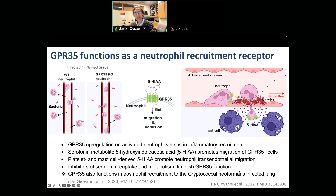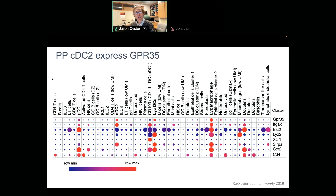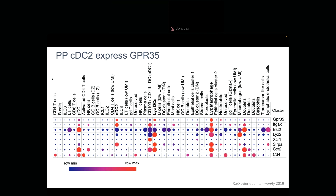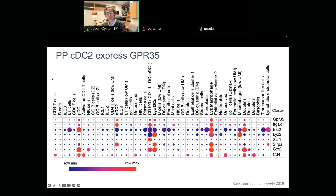With that background, we were still thinking about the roles of this receptor in dendritic cells specifically. A nice dataset from the Reminick/Xavier group showed that in Peyer's patches, just like in the spleen, GPR35 is well expressed in CDC2s. It's also in some other myeloid cells, such as lysozyme-positive DCs and macrophages in the Peyer's patch. The CDC2 compartment that's particularly relevant here is the one in the Peyer's patches.